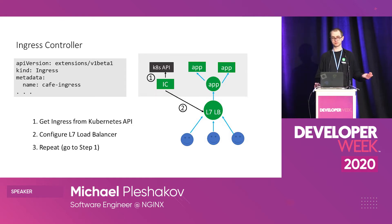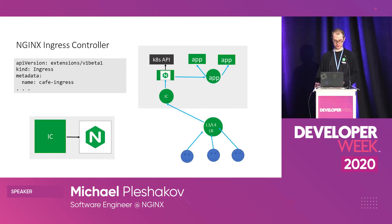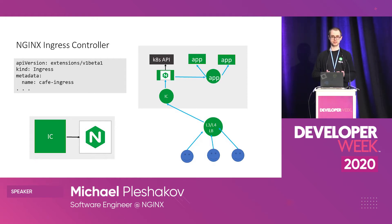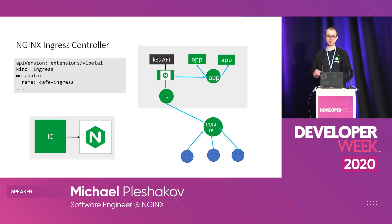There are ingress controllers for different load balancers — for NGINX, F5 BIG-IP, HAProxy, Google Cloud load balancer, and others. We developed an ingress controller for NGINX. At a high level, the ingress controller is deployed in Kubernetes in a pod, alongside NGINX, and they run inside the same container. The mechanics are the same: it talks to the Kubernetes API, generates NGINX configuration, and applies that configuration to NGINX.